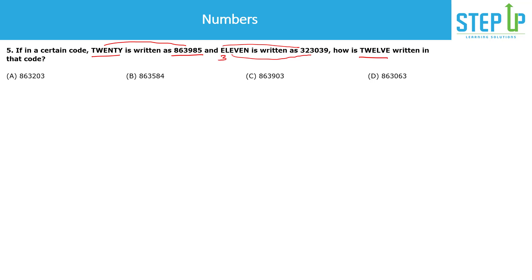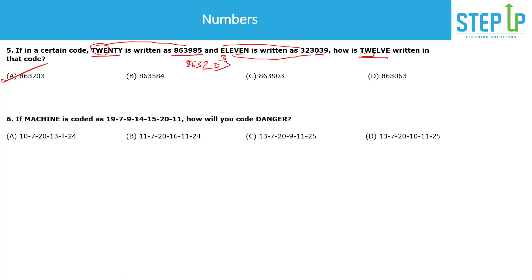So if E is coded as 3, we apply the same logic to TWELVE. T-W-E maps to codes 8, 6, 3. Then L-V-E maps to 2, 0, 3. So TWELVE would be coded as 8, 6, 3, 2, 0, 3 — which is the first option. We identified what each alphabet maps to by finding common letters across the given examples.